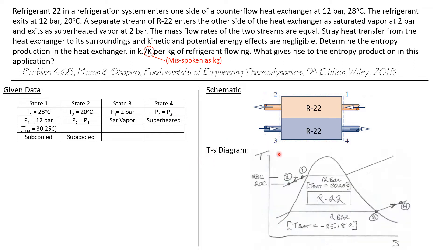Let's look at a TS diagram of these states. State one and state two are both on the 12 bar constant pressure line — both are sub-cooled liquids. State one is at 28 degrees C and state two is at 20 degrees C. States three and four are on the 2 bar constant pressure line. State three is a saturated vapor sitting right on the saturated vapor line of the vapor dome. State four is on the 2 bar line but somewhere out in the superheat region — we don't know more about it at this point.